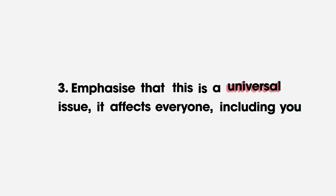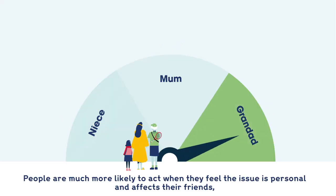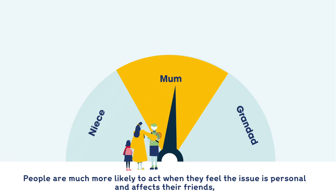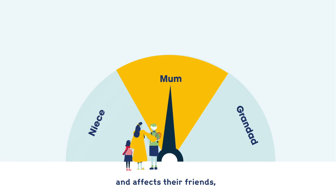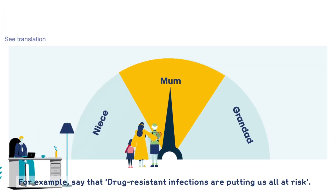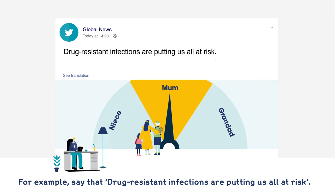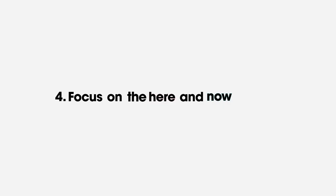3. Emphasize that this is a universal issue — it affects everyone, including you. People are much more likely to act when they feel the issue is personal and affects their friends, family or themselves. For example, say that drug-resistant infections are putting us all at risk.